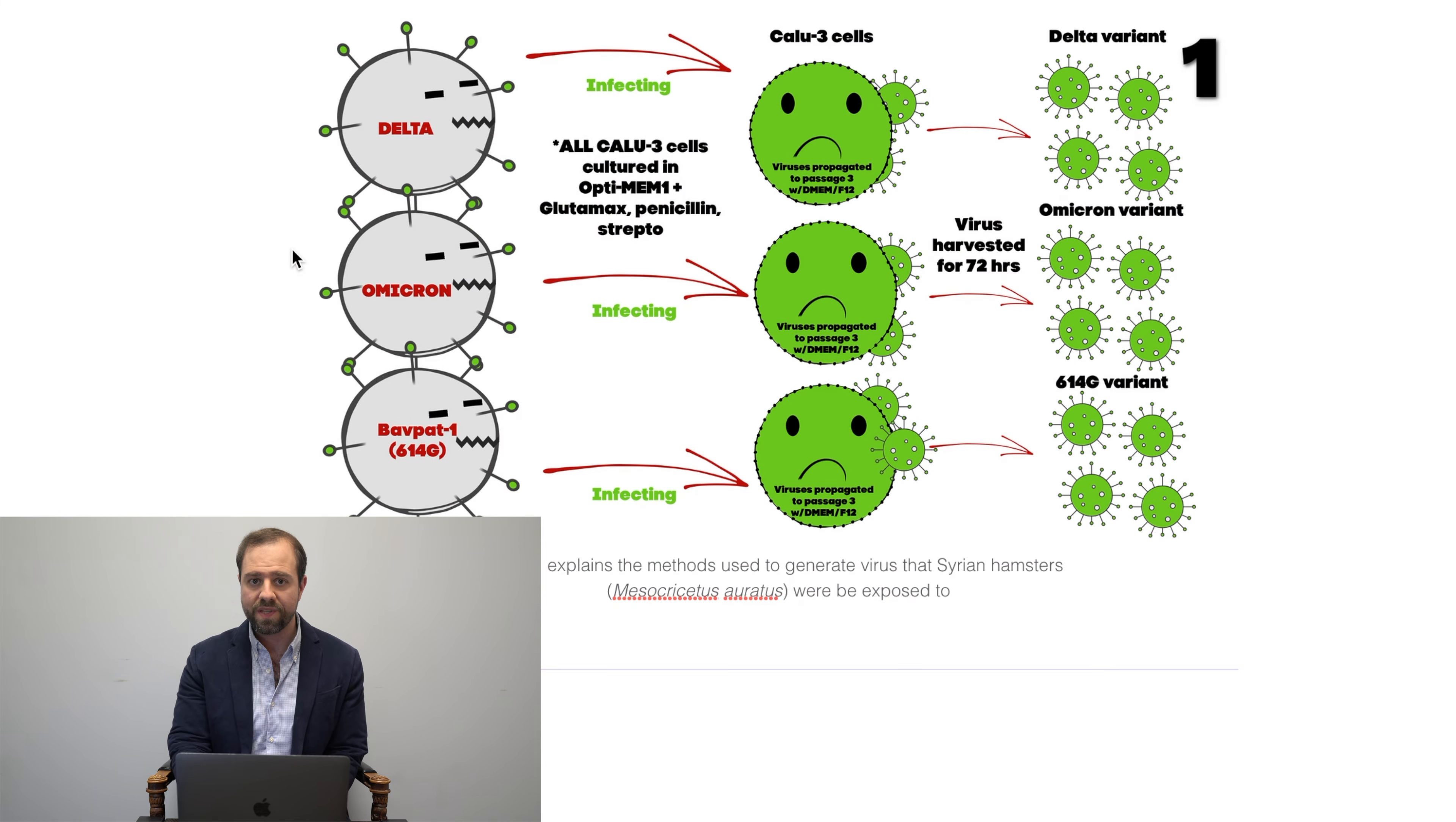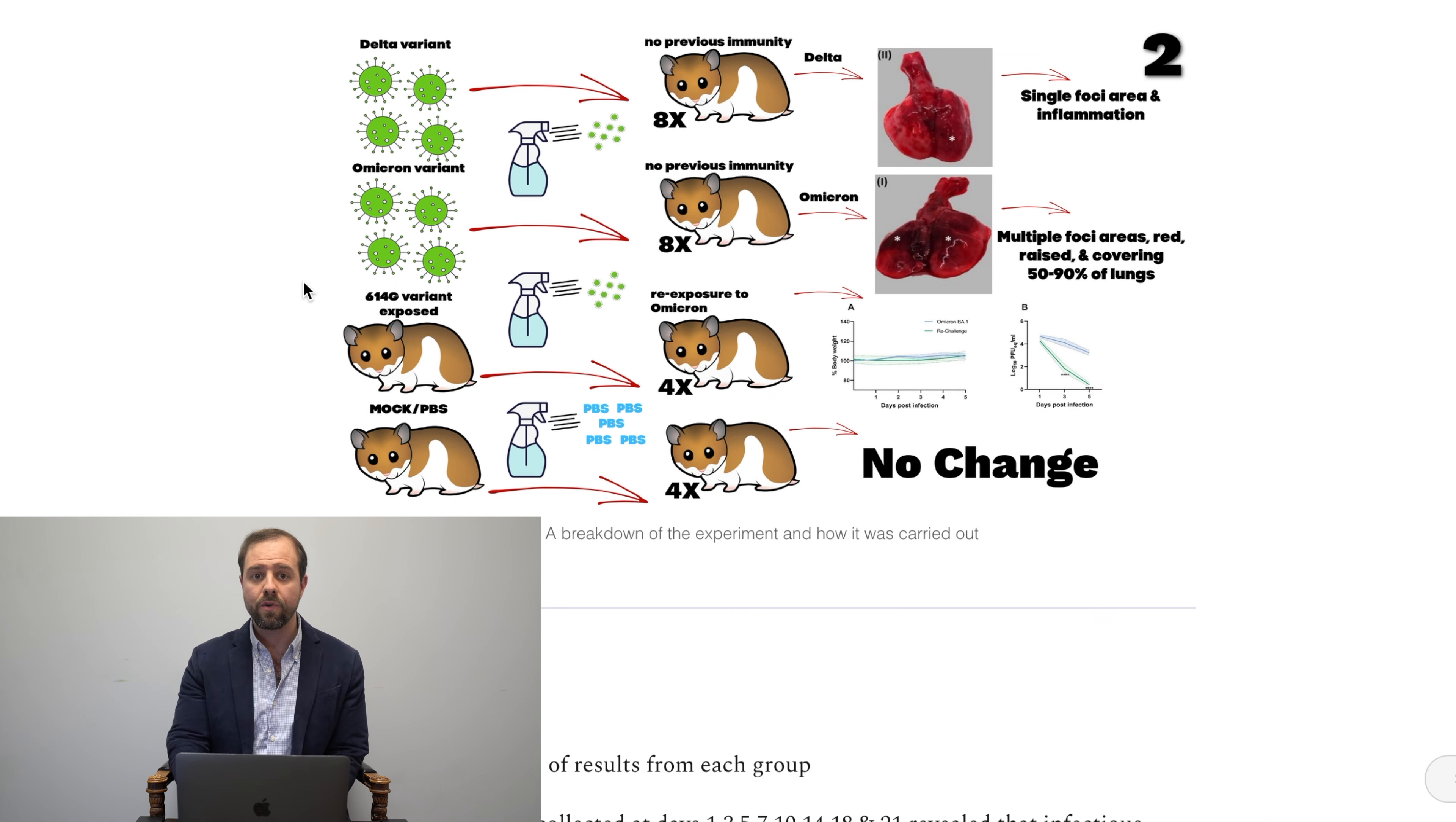Now, again, if you look at the far left column, the study was broken up into four groups, each group to be inoculated or sprayed with different variants. Once sprayed, the hamsters would inhale the virus that would end up infecting them. So now the groups. Group one, hamsters that would be inoculated with Delta that had no previous infection with SARS-CoV-2. There were eight in that group. Now, group two, those inoculated with Omicron, also having no previous infection. There were eight total of them.